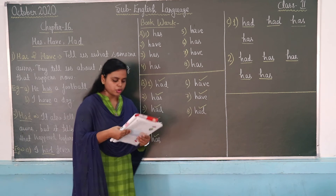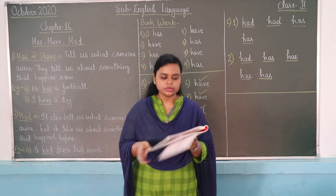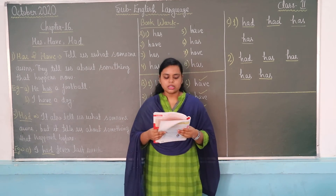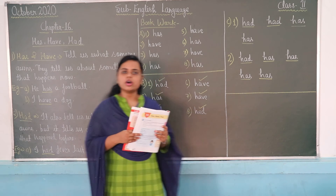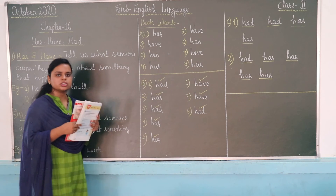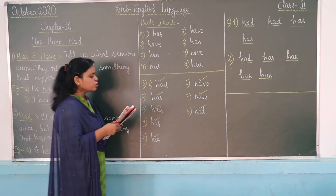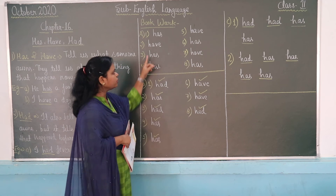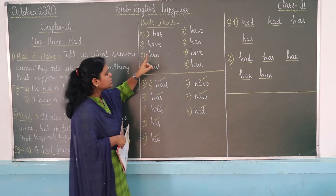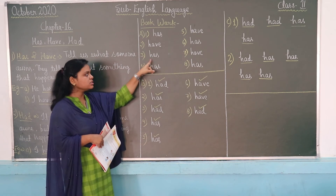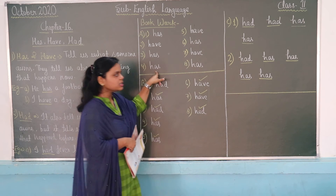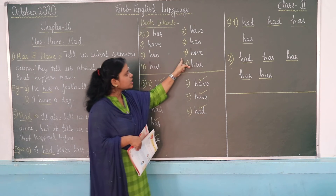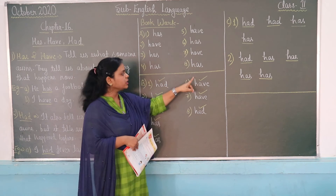Now it is time for the book work. Go to page number 55. You will find Exercise A, which says: fill in the blanks with Has or Have. The answers are: first — has, second — have, third — has, fourth — has, fifth — have, sixth — has, seventh — have, eighth — have, ninth — have.